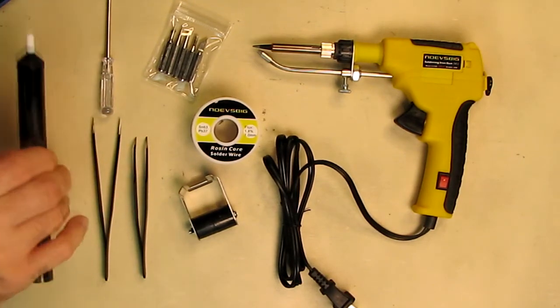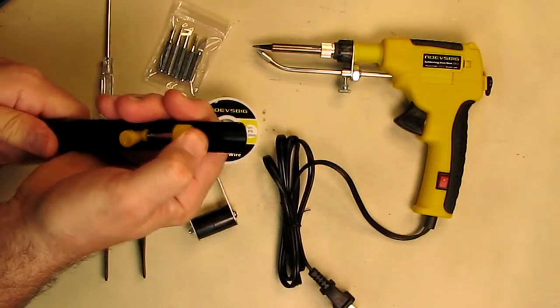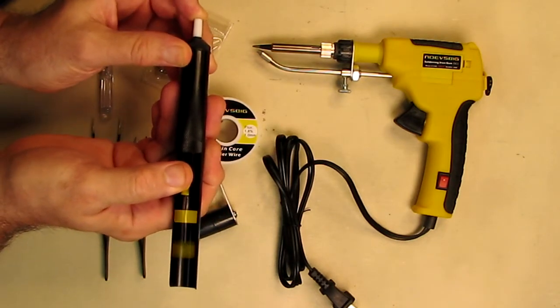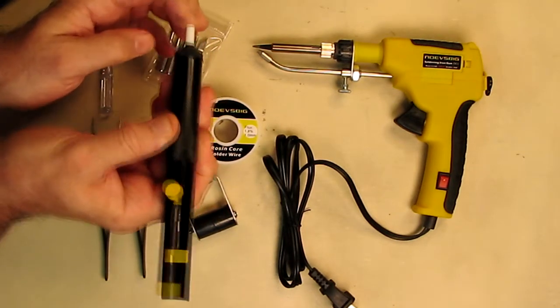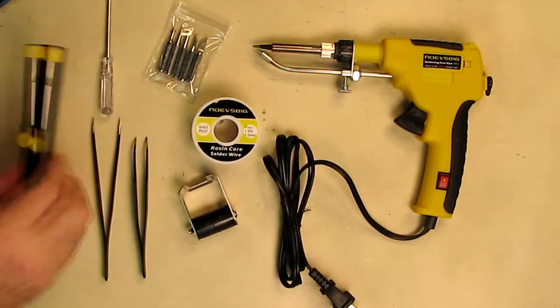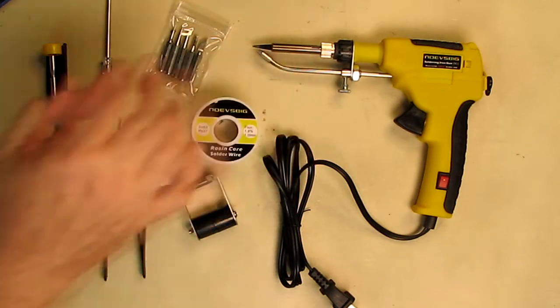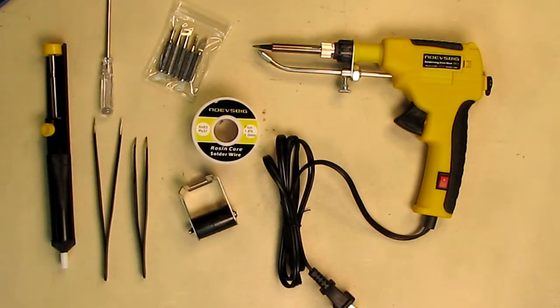This solder sucker is very simple to use. It's one of these devices where you compress the spring and then push that button right there. As I block it, it has a huge amount of vacuum in there, and that will pull solder up. So if you add too much solder on the connection or you want to remove components, you can use that.